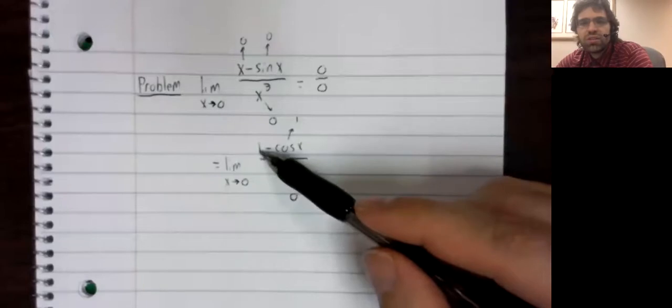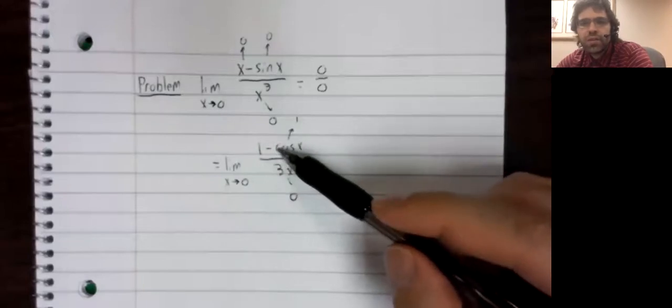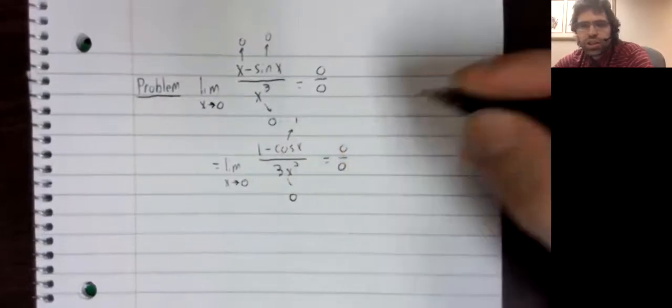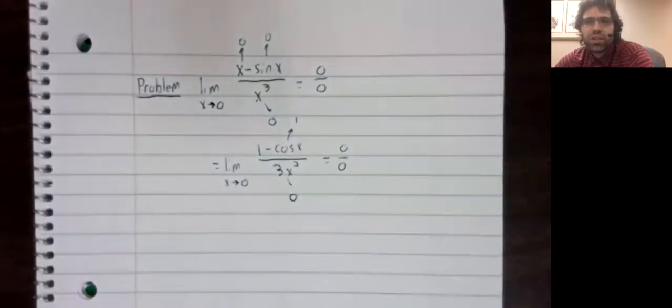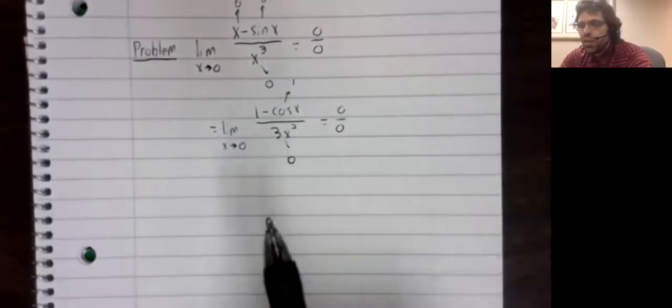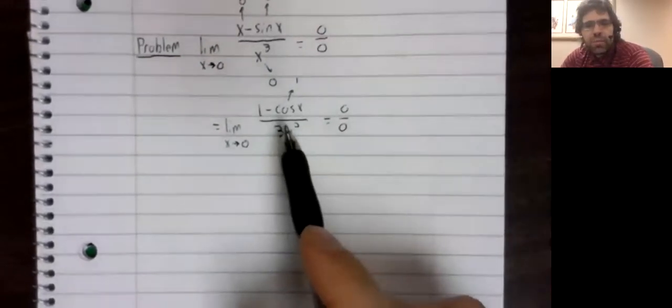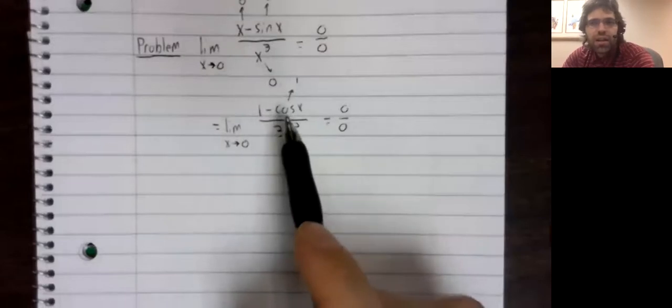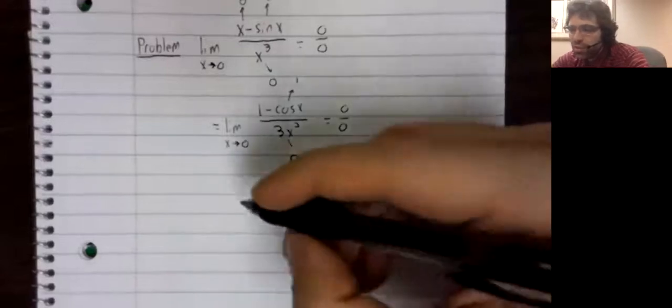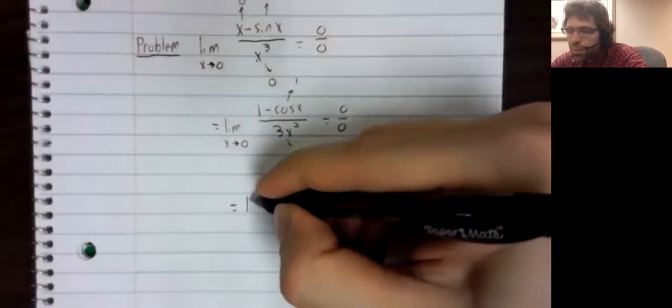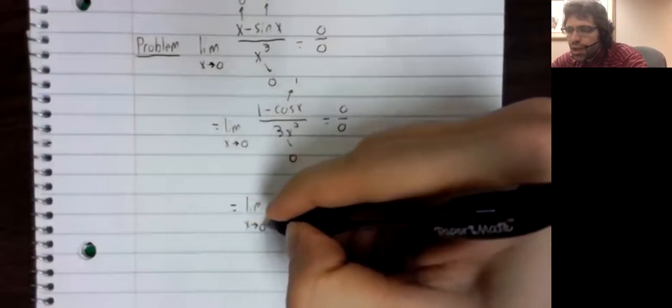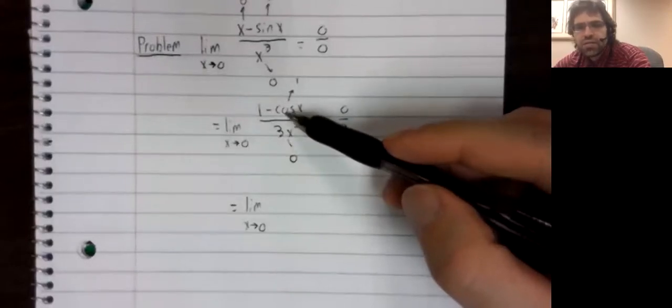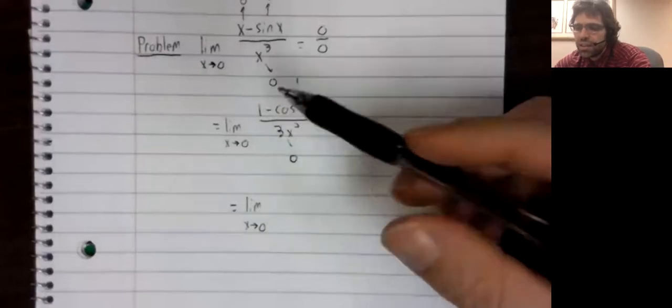As x goes to 0, this goes to 1 minus 1. This goes to 0, this fraction goes to an indeterminate form. So we can't compute this limit, except maybe we can because we've just learned a trick for computing limits of indeterminate form. L'Hôpital's rule applied again. The derivative of the cosine is the negative sine. We've got a second negative sign here.